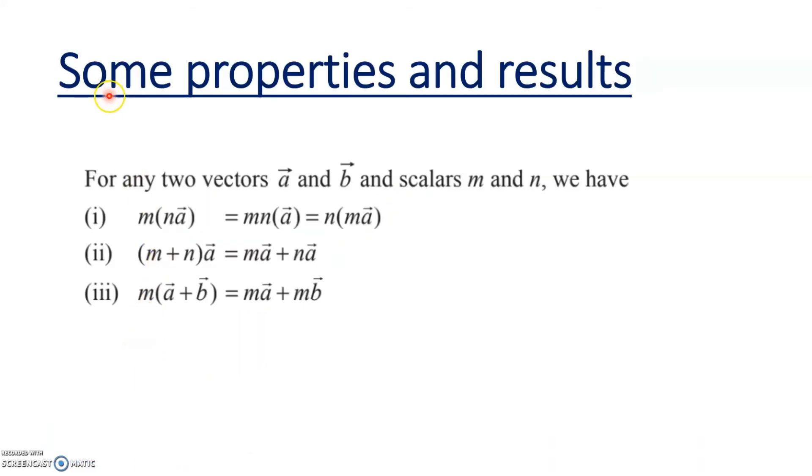These are some properties and results that we can derive from scalar multiplication. For any two vectors a and b and scalars m and n, we have m(n·a) = mn(a) = n(m·a). This is the first result.